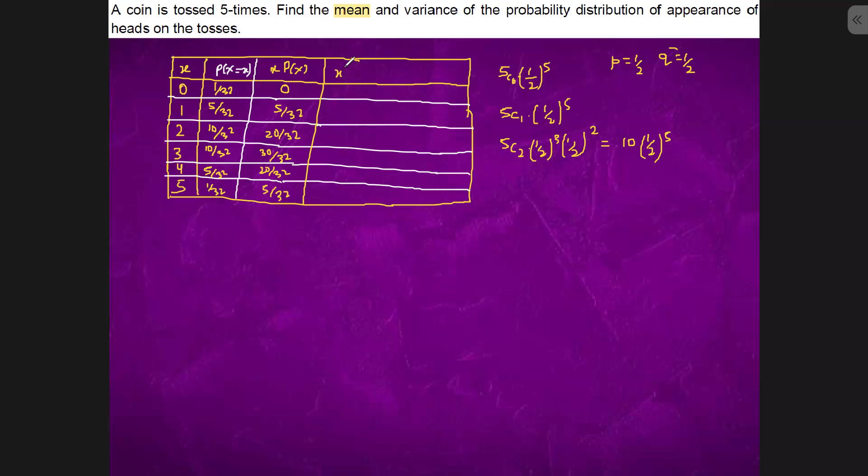And second we have X squared P(X), which is 0, 1 square into 5, 5 by 32, 2 square into 10, 40 by 32, 3 square into 10, 90 by 32, 4 square into 5, 80 by 32, this is 5 square, 25 by 32.